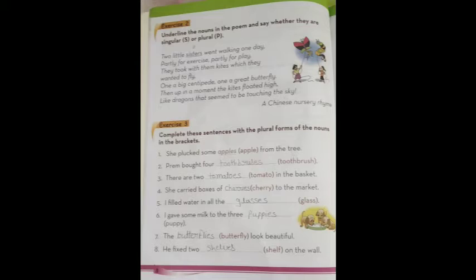Kites, you have seen, and they want to fly. One is big centipede. Centipede, which is the name, this is centipede. You can do singular. One is great butterfly. Butterfly, what is it? It is singular. Then, in a moment, the kites floated high. Like a centipede, like a butterfly, it was a kite. Like dragons that seemed to be touching the sky.